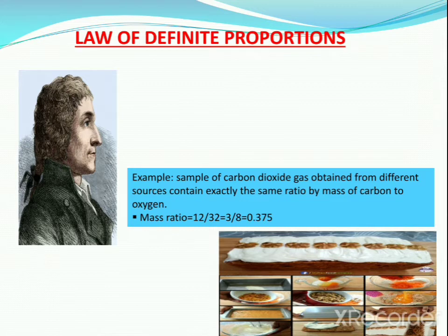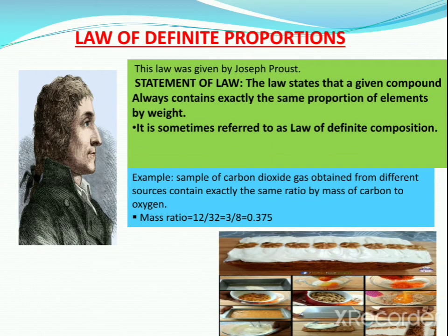The next law is the law of definite proportions. This law was given by Joseph Proust. The law states that a given compound always contains exactly the same proportion of elements by weight. It is sometimes referred to as the law of definite composition. For example, samples of carbon dioxide gas obtained from different sources — from vehicles or from burning of wood — contain exactly the same ratio by mass of carbon and oxygen. Mass of carbon is 12 divided by mass of oxygen is 32, which gives 0.375.